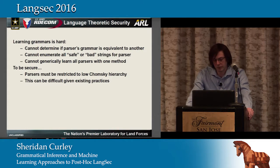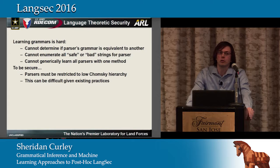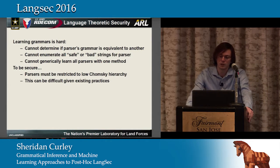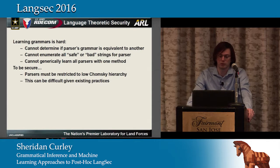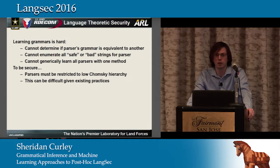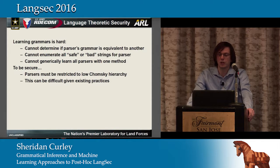From a LangSec standpoint, this means learning grammars is hard. We cannot determine if a parser's grammar is equivalent to another — even if we know a grammar that is compromised or valid, we can't necessarily tell if the one we're looking at is the same. It's generally not possible to enumerate all safe or bad strings for a parser, especially for an infinite language. And you cannot generically learn all parsers using a single method — Clark's and Anglin's learnable language examples only apply to those very specific subsets.